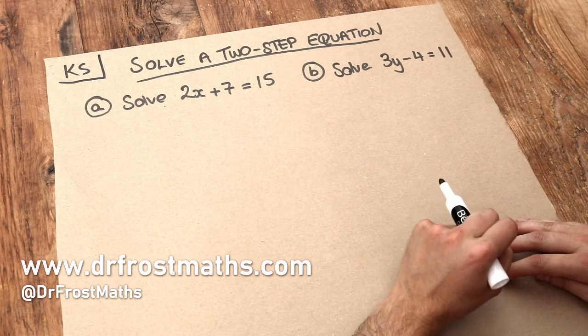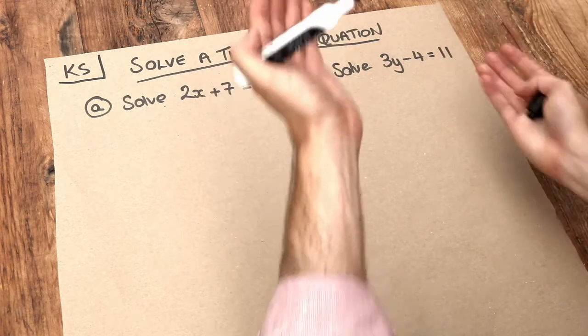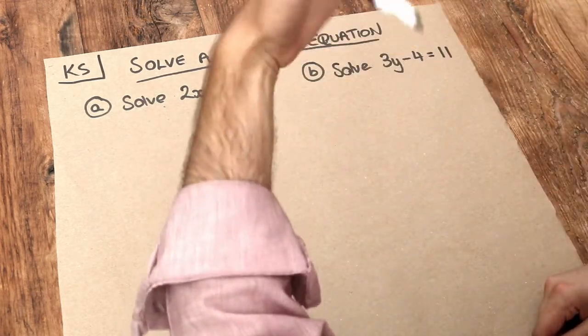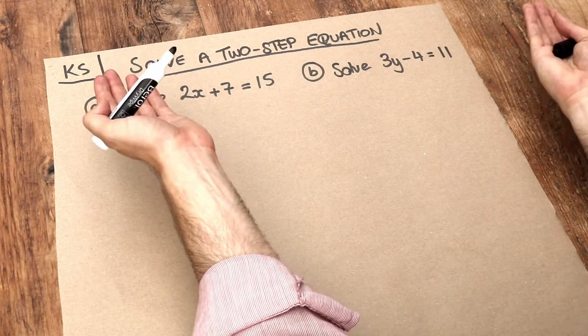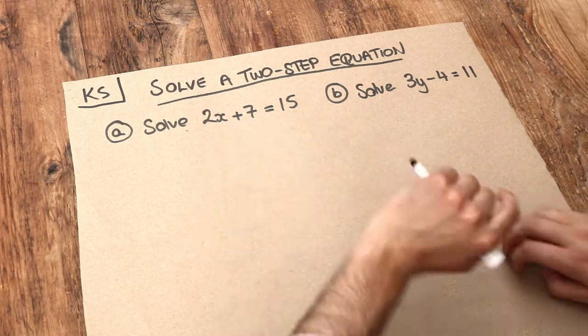In the previous video where we solved one-step equations, we discussed the idea of equations being a balancing act. What we do to one side of the equation, we have to do the same to the other. So if we added 2 to one side of the equation, we would have to add 2 to the other side.